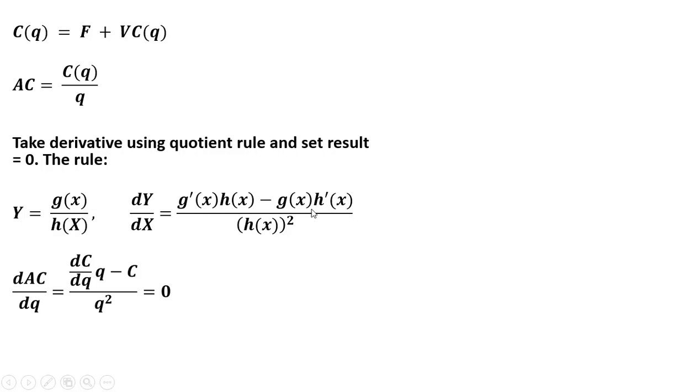Multiplied by the derivative of what's in the denominator. So the derivative of h of x, in our case the derivative of q is just 1, so we get that result. Everything again is set equal to 0.